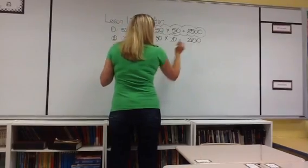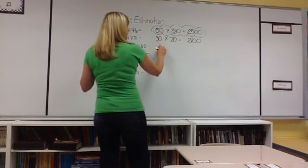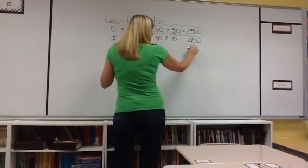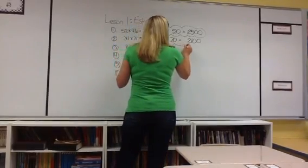And the children know to use the zero pattern because there's one zero on the 30 and one zero on the 70. They need two zeros in their answer.